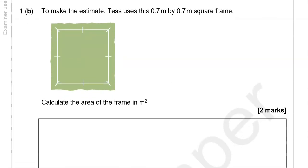To make the estimate, Tess uses this 0.7 meters by 0.7 meters square frame. Calculate the area of the frame in square meters.